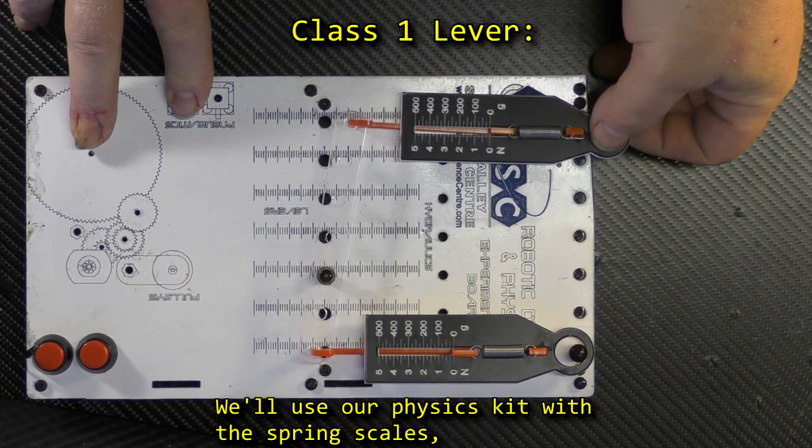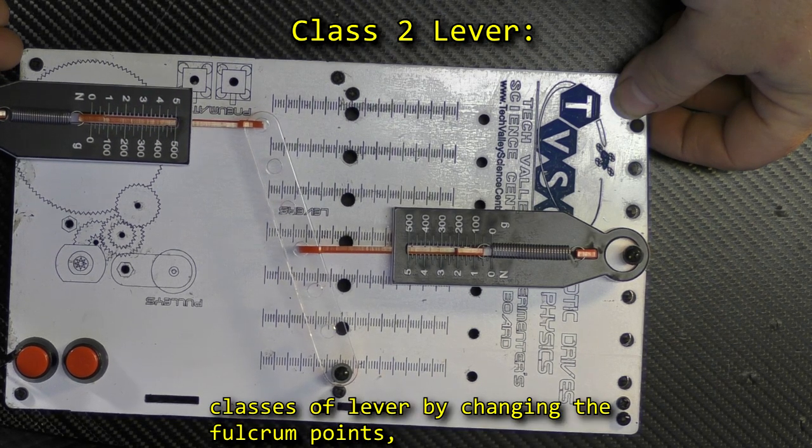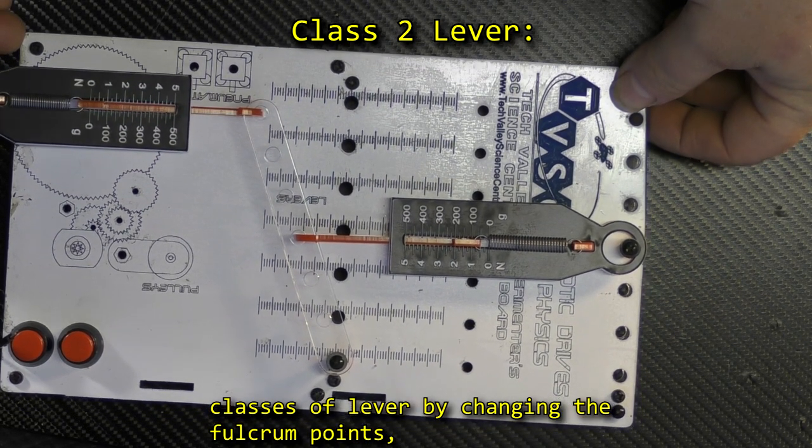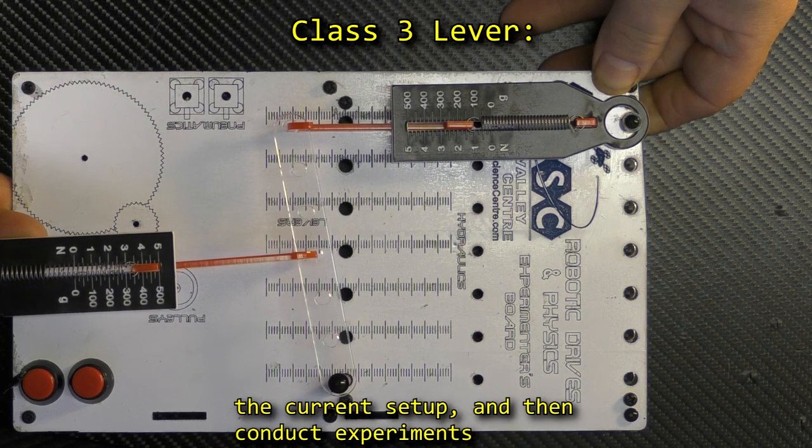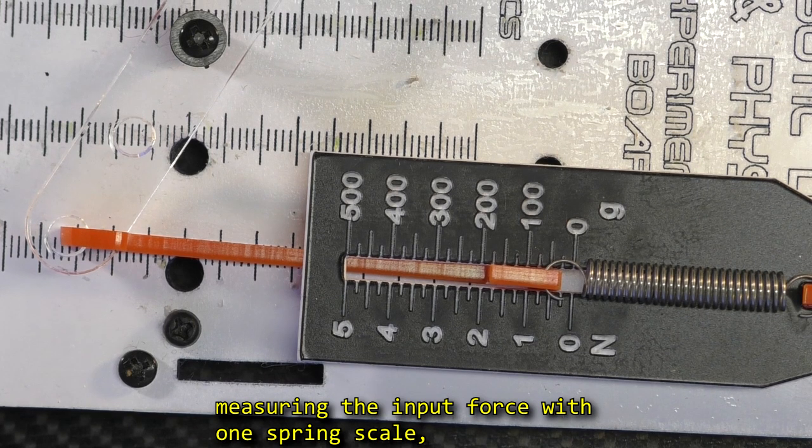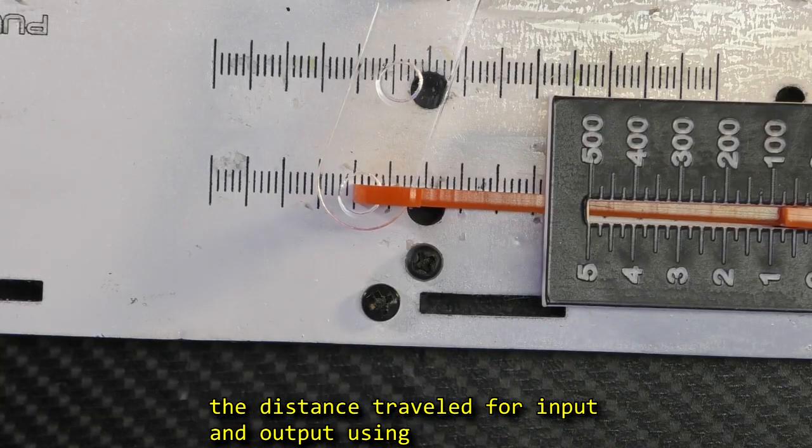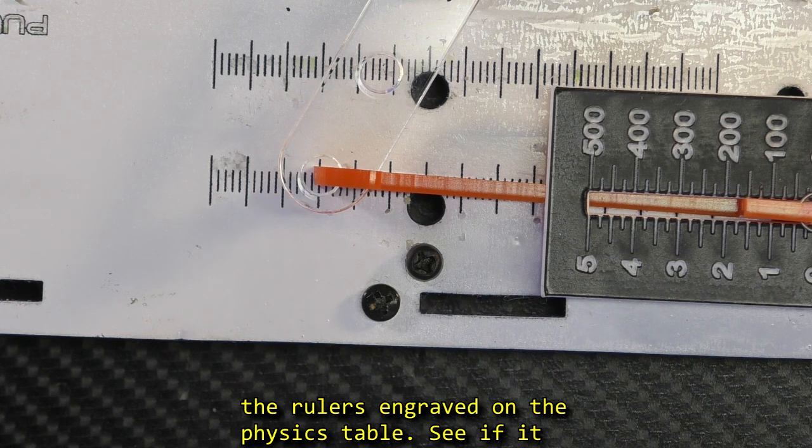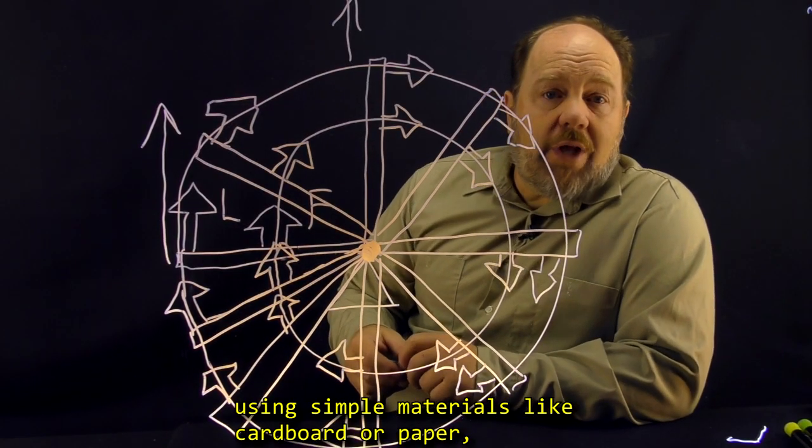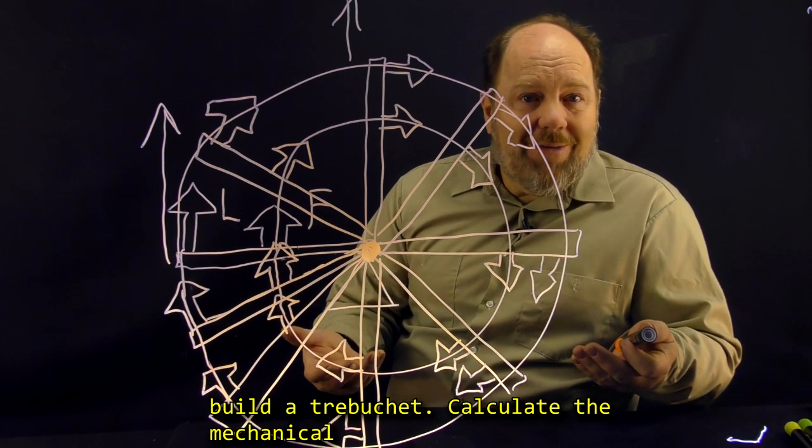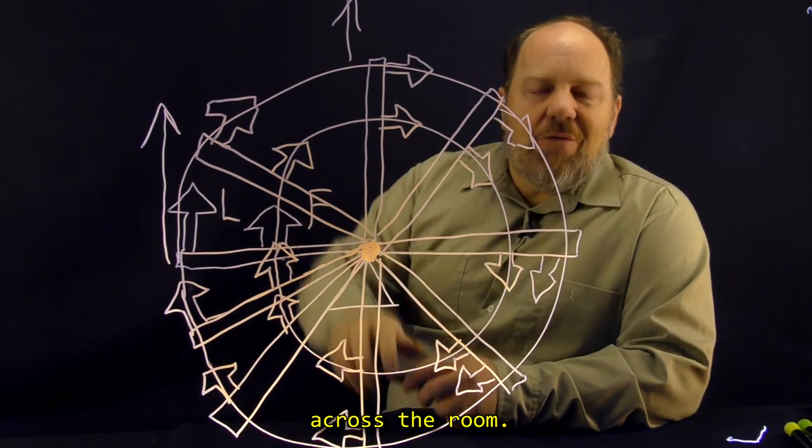We use our physics kit with the spring scales and the lever bar. Set up several different scenarios of mechanical advantage for all three classes of lever by changing the fulcrum points and where you hook in the spring scales. Make predictions based on the mechanical advantage of the current setup, and then conduct experiments measuring the input force with one spring scale, the output force with the other spring scale, and measure the distance travelled for input and output using the rulers engraved on the physics table. See if it approximately matches your predictions. From there, you can move on to other challenges using simple materials like cardboard or paper, build a trebuchet, calculate the mechanical advantage of the simple machine, and see if you can get some wads of paper into the garbage can from across the room.